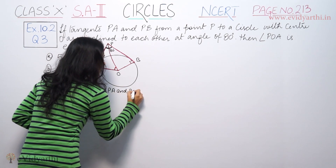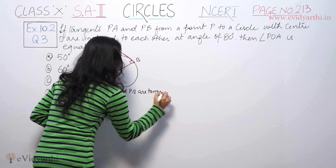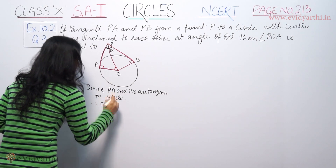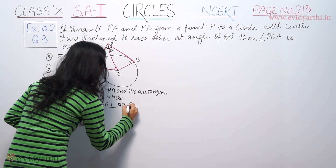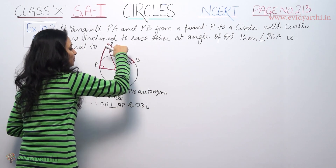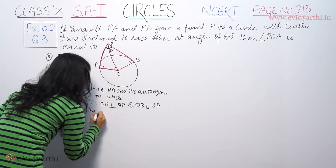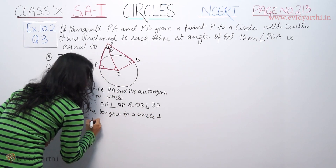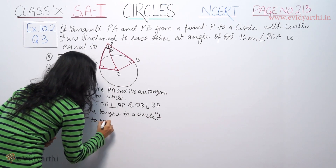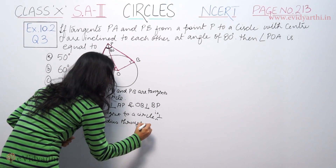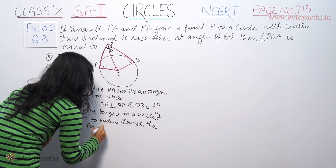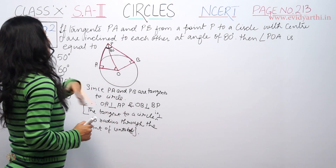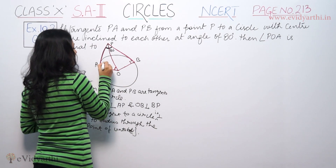PA and PB are tangents to the circle. Therefore, radius OA is perpendicular to tangent PA at the point of contact, and radius OB is perpendicular to tangent PB at the point of contact. The tangent to a circle is perpendicular to the radius at the point of contact.